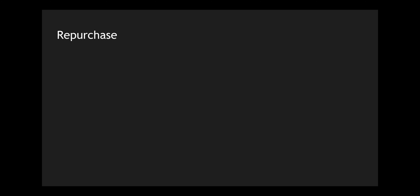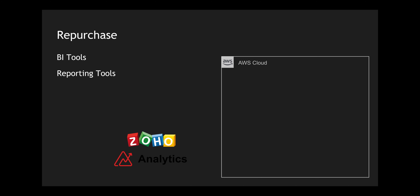The next one is repurchase — similar to scrapping your existing product and buying a new product from the marketplace. This could be something like buying a Salesforce CRM, Zoho, or Freshworks — new players in the SaaS space — where you don't want to invest much on your existing legacy product. Instead, you go to the market and buy a software-as-a-service product where you pay only for usage. A common example would be BI and reporting tools — you don't have to build reporting engines; you can buy something like Zoho Analytics.